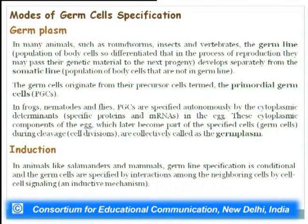Another mode of germ cell specification found in animals like salamanders and mammals is conditional — germ cells are specified by interactions among neighboring cells through cell-cell signaling, an inductive mechanism. The germ cells are not defined at the onset of development; there are no cytoplasmic determinants in the egg, but a cell becomes a germ cell when influenced by neighboring cells.